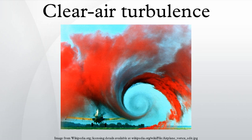Clear air turbulence is the turbulent movement of air masses in the absence of any visual cues such as clouds, and is caused when bodies of air moving at widely different speeds meet. The atmospheric region most susceptible to CAT is the high troposphere at altitudes of around 7,000 to 12,000 meters as it meets the tropopause. Here CAT is most frequently encountered in the regions of jet streams. At lower altitudes it may also occur near mountain ranges. Thin cirrus cloud can also indicate high probability of CAT.